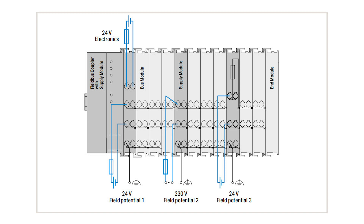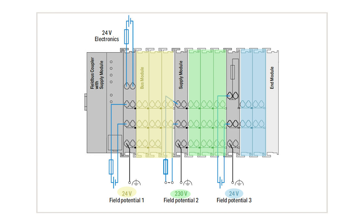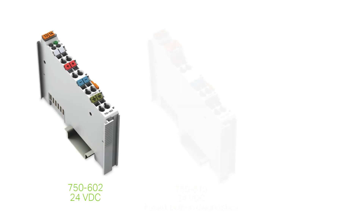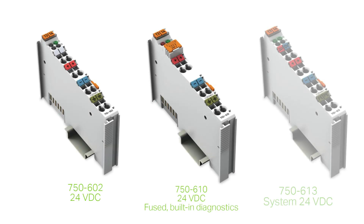With adding different field supply modules, WAGO makes it easy for you to utilize different voltages, add individual power sources to meet current requirements, and implement separate groups for emergency stops — all in the same node. Some available voltages are 5 to 15 volts DC, 24 volts DC, and 0 to 230 VAC or DC.